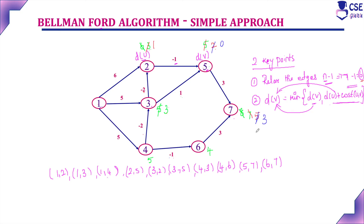Fourth relaxation: 1 to 2 gives 6, already 1. 1 to 3 gives 5, already 3. 1 to 4 is 5. 2 to 5: 1 minus 1 equals 0, already 0. 3 to 2: 3 minus 2 equals 1. 4 to 3: 5 minus 2 equals 3. 4 to 6: 5 minus 1 equals 4. 5 to 7: 0 plus 3 equals 3. 6 to 7: 4 plus 3 equals 7, already 3 is minimum. Fourth relaxation complete — no change from third relaxation.